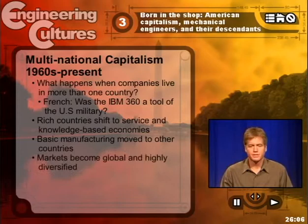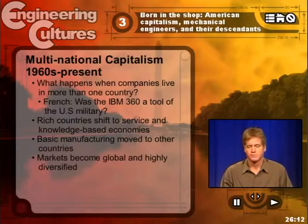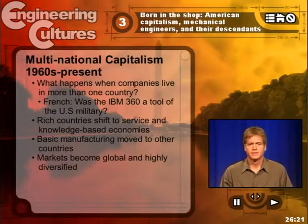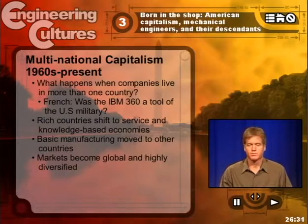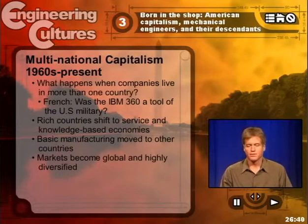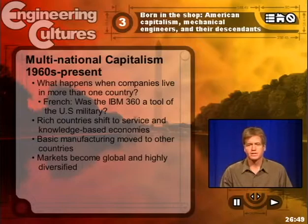Markets for these entities called corporations — multinational corporations — living across national boundaries, become global and highly diversified. You find companies moving beyond the Fordist period, where economies of scale meant producing products more cheaply for wider markets, into economies of scope, whereby companies were controlling all different dimensions of the production system from raw materials through to production and distribution, constantly searching for new markets.